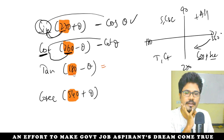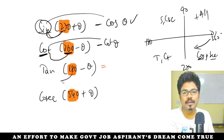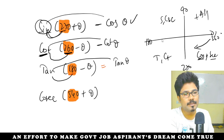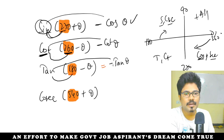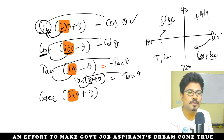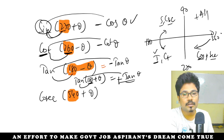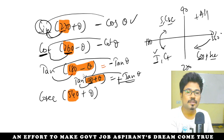Cot(180 minus theta): 180 is even, so function name stays — cot remains cot. But 180 minus theta is in the second quadrant, where tan and cot are negative. So cot(180 minus theta) is negative. Similarly, tan(180 plus theta): 180 is even, tan stays. 180 plus theta is in the third quadrant where tan is positive. So tan(180 plus theta) equals positive tan theta.